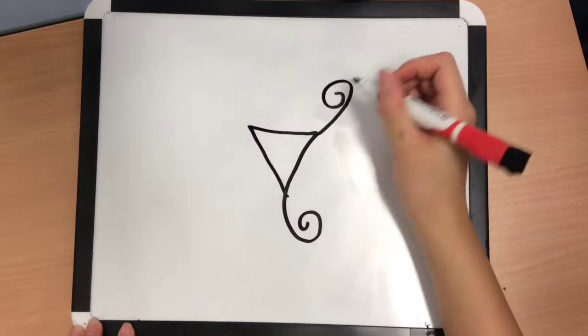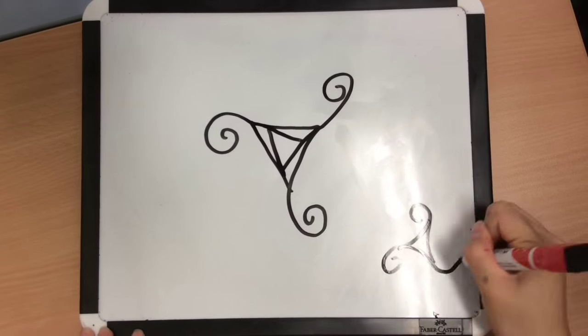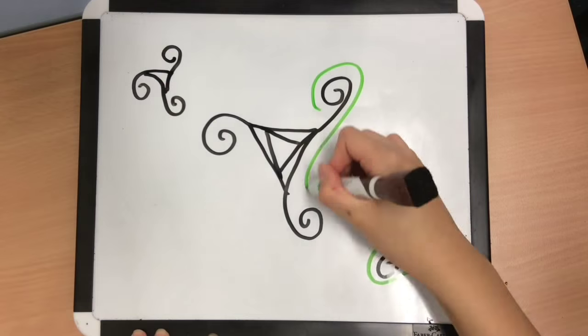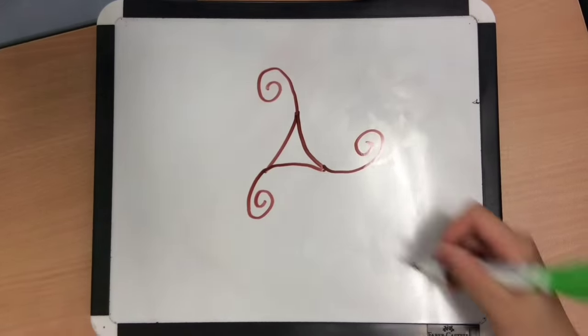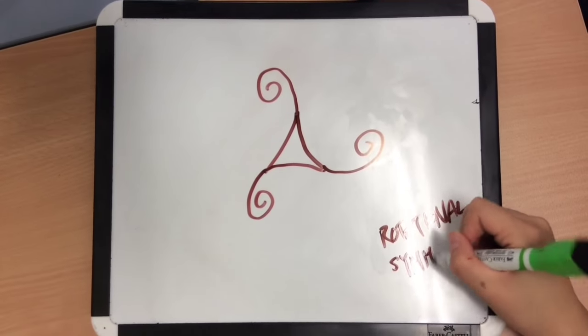The Triscalian is also one example of a three-fold rotational symmetrical object. It has an order of rotation, meaning the number of matches you can make in one rotation, of three.